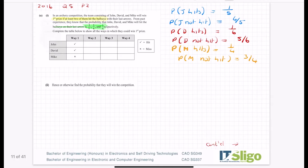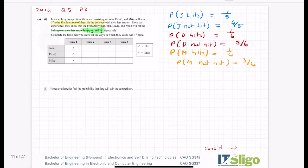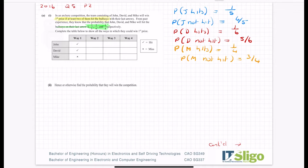Complete the table below to show all the ways they could win first prize. Well, I can see that John could hit, David could hit - they're a tick so they're a hit and the X is a miss - so Mike has missed that one. Another way is John could miss and David and Mike could hit, or David could miss and John and Mike could hit, or of course all three could hit it. That looks good.